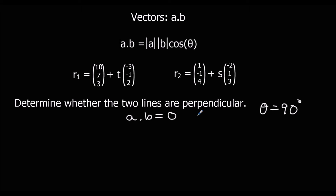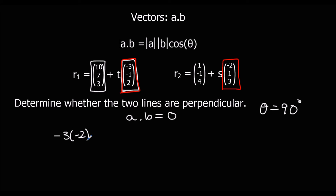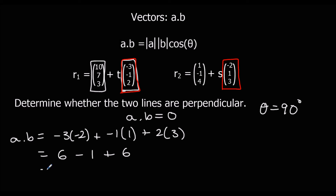To determine whether two lines are perpendicular, we check if a·b equals 0. Looking at the direction vectors, we've got: negative 3 times negative 2, plus negative 1 times 1, plus 2 times 3. That gives us 6, minus 1, plus 6, which is 11. Since a·b is 11 and not 0, the lines are not perpendicular.